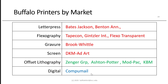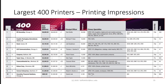Apologies to any local Buffalo printers not included on that list — the purpose is just to show students we have local printers fitting each printing process category. Every year, Printing Impressions Magazine ranks the 400 largest printers. In 2019, the largest printer in the country was R.R. Donnelly, number two was Graphic Packaging International (GPI), and number three was Quad Graphics — with about $6 billion in sales and nearly 40,000 employees across 302 plants.